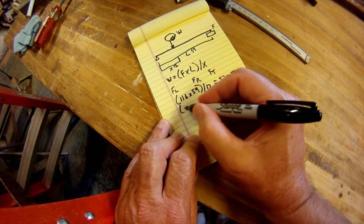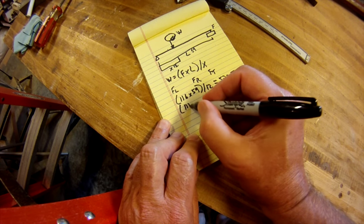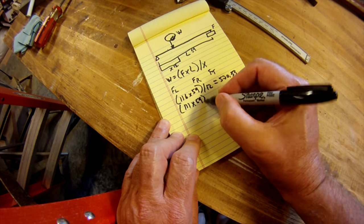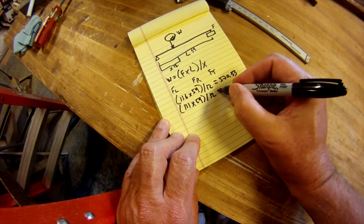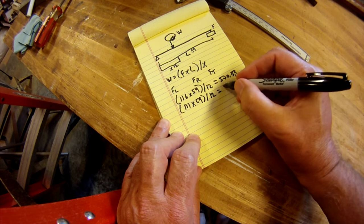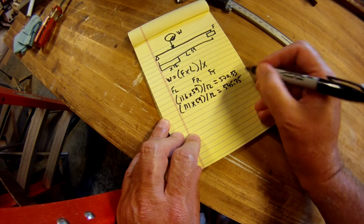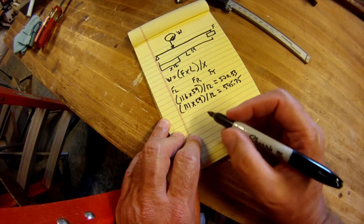For the right-hand side, we will do 111 times 59 divided by 12 equals 545.75. I'm not a math whiz here, I figured these out in advance.